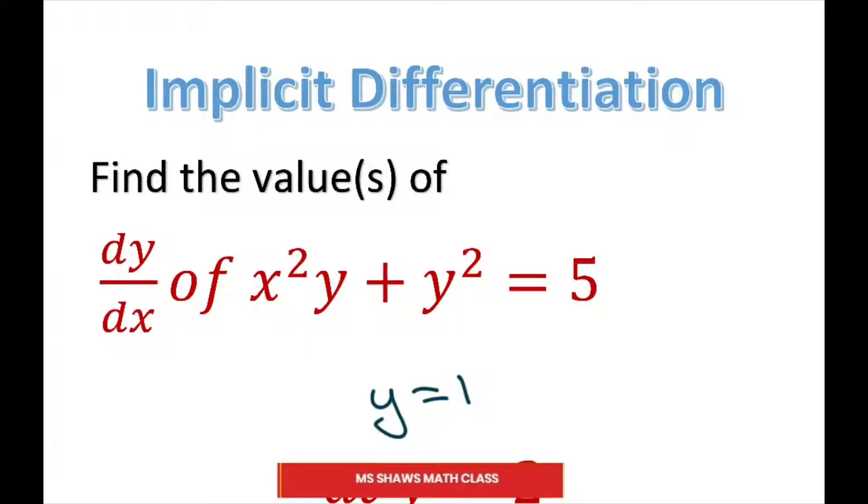Hi everyone. We're going to use implicit differentiation to find the values of dy/dx of x²y + y² = 5 where y is equal to 1.